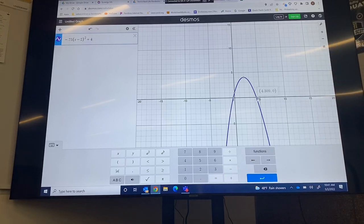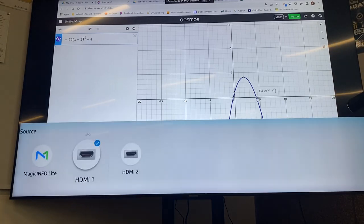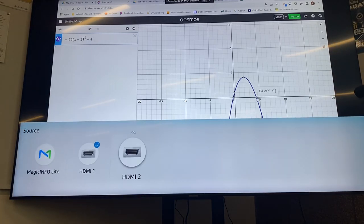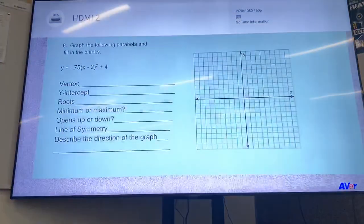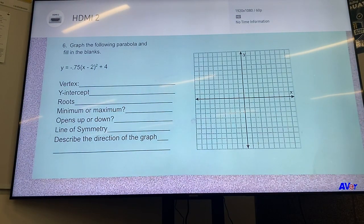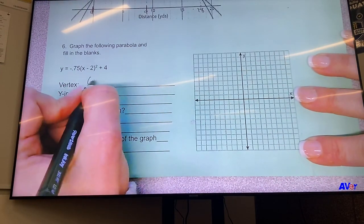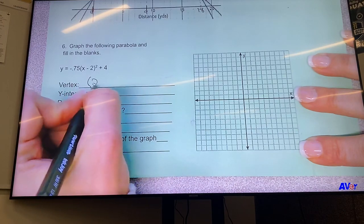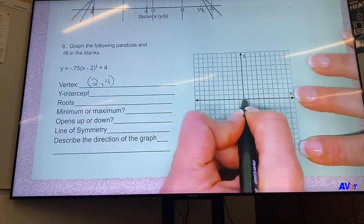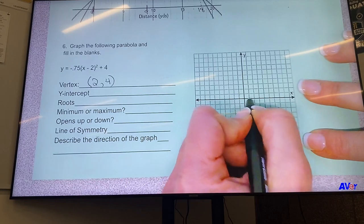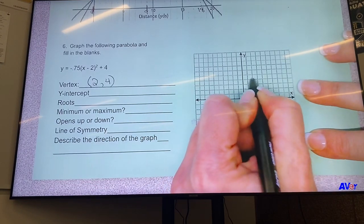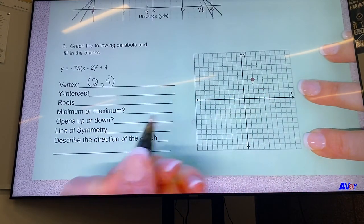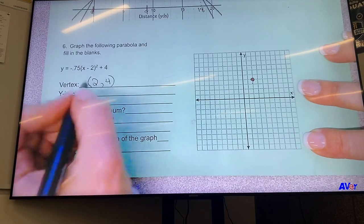And now we can go back to our worksheet and answer all the questions. All right, so from Desmos we saw the vertex is at (2, 4). So I'm going to go ahead and graph that: 2, 1, 2, 1, 2, 1, 2, 3, 4. And then the y-intercept was at (0, 1).